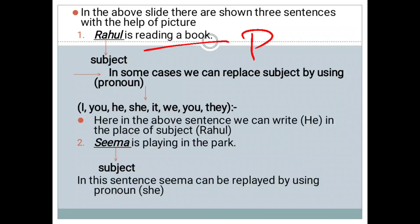For example, if we are asked to write an essay on our best friend — suppose your best friend's name is Shekha or Sakshi — in the whole essay, you cannot write their name again and again. Instead, you will use a pronoun. In the above sentence, we can write He in place of the subject Rahul.